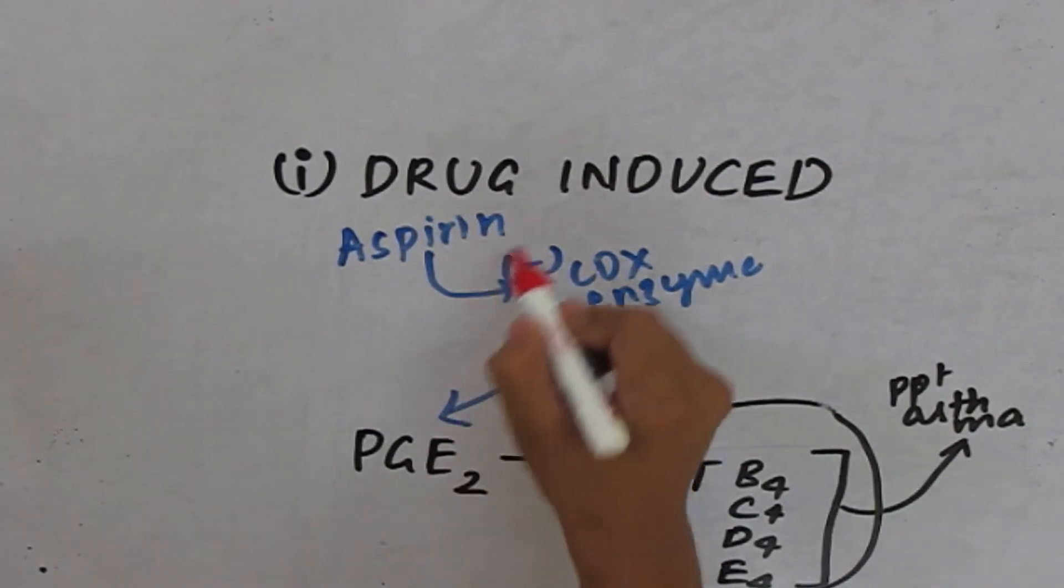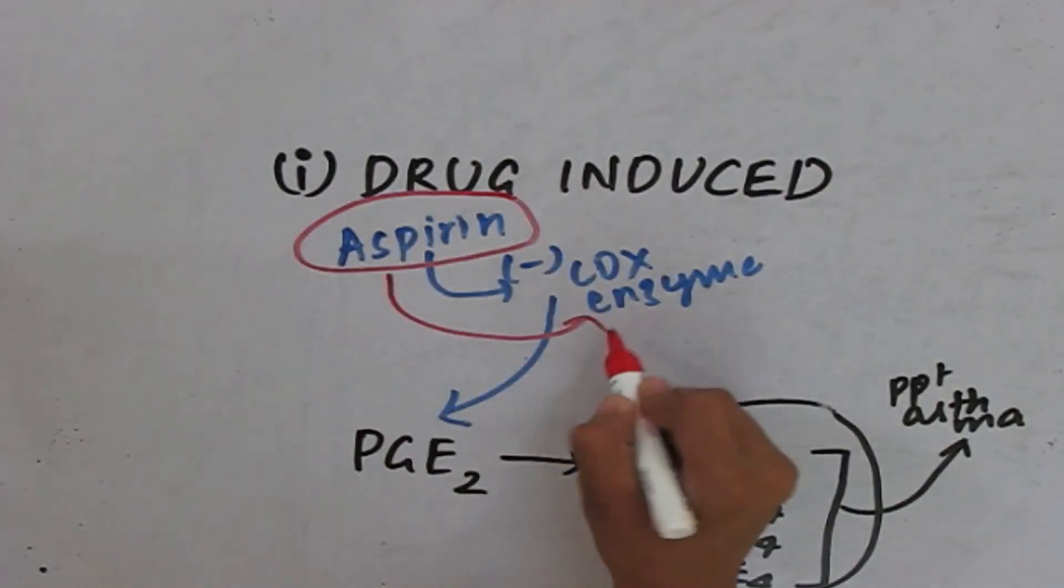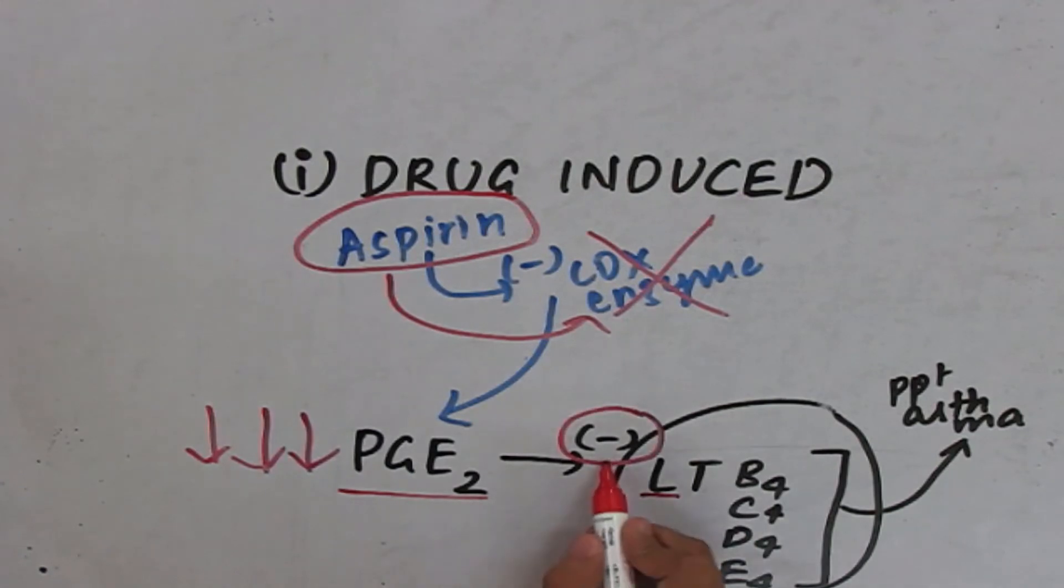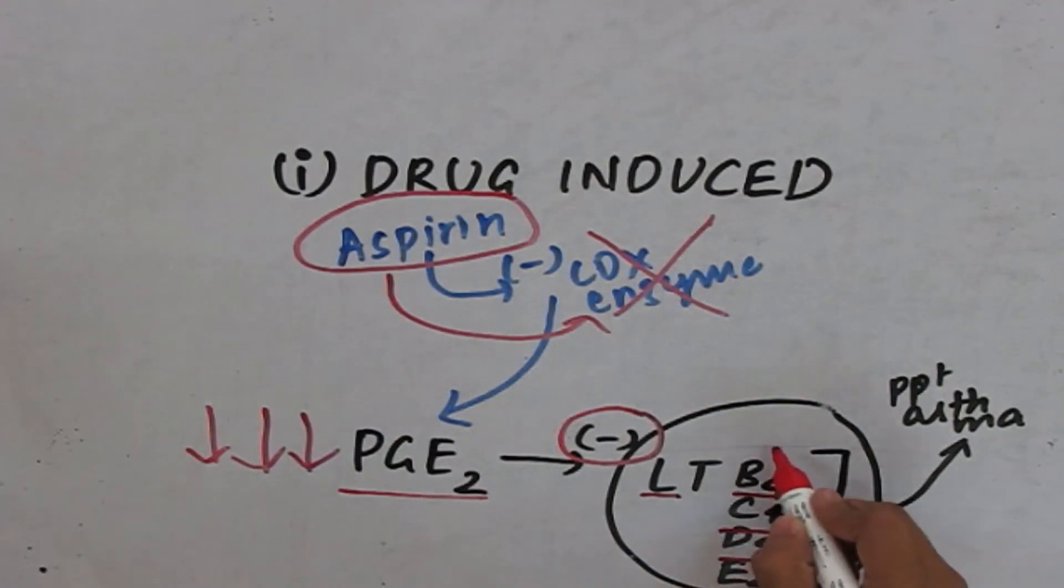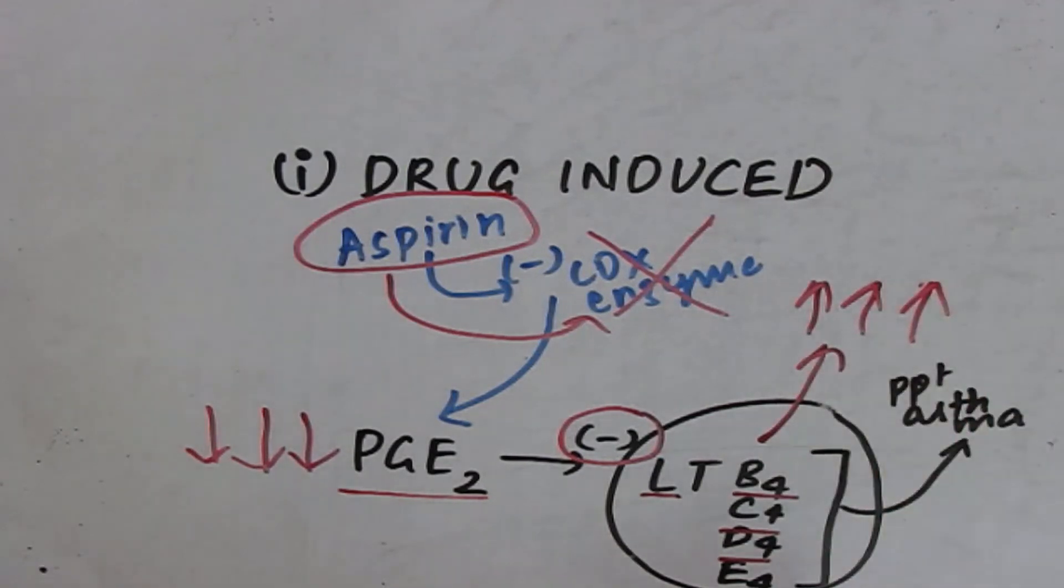When aspirin is introduced into the body, it inhibits the COX enzyme so that there is a decrease in synthesis of PGE2. When there is decrease in synthesis of PGE2, there is no inhibition on the synthesis of leukotrienes B4, C4, D4, and E4. So, the amount of these in the body increases. As the amount of these increase in the body, these precipitate asthma.